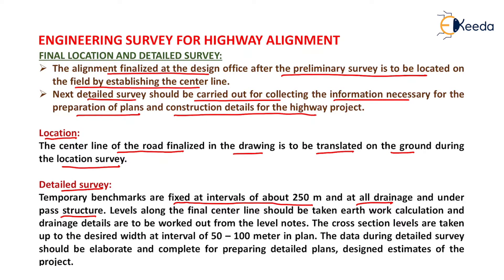Levels along the final centerline should be taken, and earthwork calculations and drainage details are to be worked out from the level nodes. The cross-section levels are taken up to the desired width at intervals of 50 to 100 meters in plan. The data during detailed survey should be elaborate and complete for preparing detailed plans, design estimates of the project, so that we can prepare the detailed plan and estimate the accurate quantity of material as well as the cost of that particular alignment.